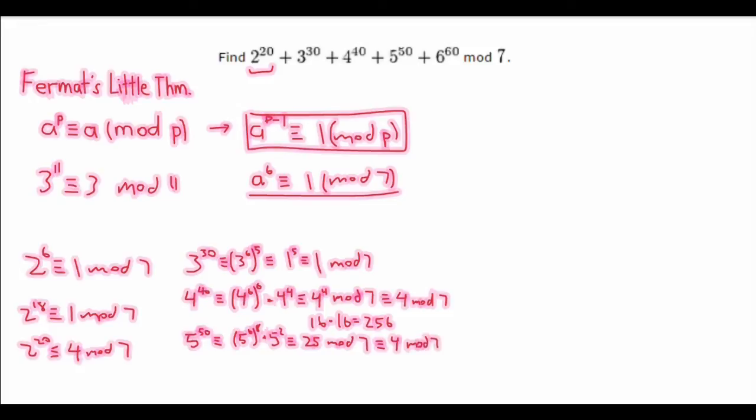And finally, 6 to the power of 60. We could go on like the rest of them, except for, here's a little neat trick. 6 is congruent to negative 1 mod 7. So, we can do negative 1 to the 60, which is just congruent to 1 mod 7.